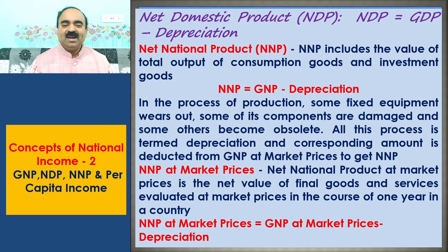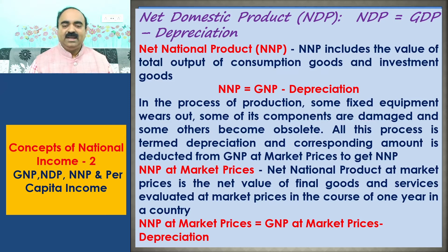Net National Product, shortly known as NNP. NNP includes the value of total output of consumption goods and investment goods. NNP is equal to GNP minus depreciation. In the process of production, some fixed equipment wears out, some of its components are damaged, and some others become obsolete. All this process is termed depreciation, and the corresponding amount is deducted from GNP at market prices to get NNP.